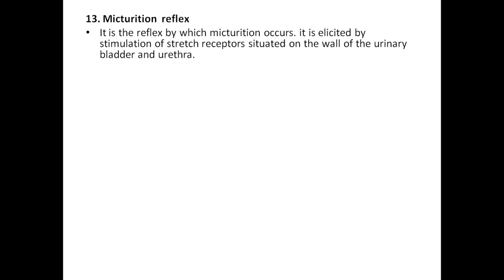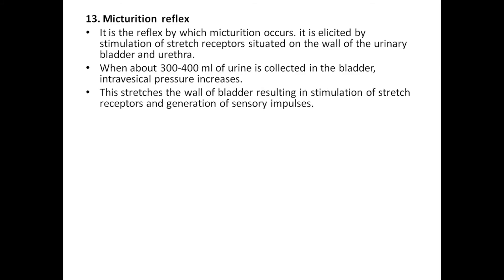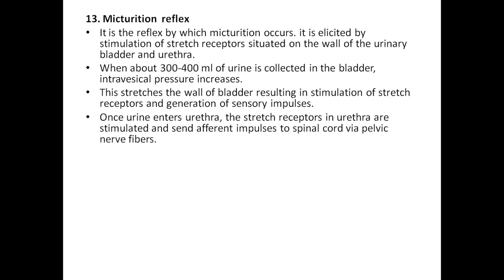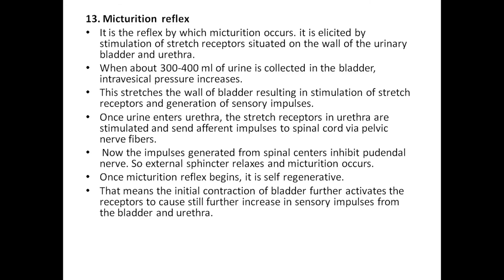Micturition reflex — it is the reflex by which micturition occurs. It is initiated by stimulation of stretch receptors situated in the wall of the urinary bladder and urethra. When about 300–400 ml of urine is collected in the bladder, the intravesical pressure increases, stretching the wall of the bladder and stimulating stretch receptors to generate sensory impulses. Once urine enters the urethra, stretch receptors in the urethra are stimulated and send afferent impulses to the spinal cord via pelvic nerve fibers. The impulse generated from spinal centers inhibits the pudendal nerve, so the external sphincter relaxes and micturition occurs. Once the micturition reflex begins, it is self-regenerative — meaning initial contraction of the bladder further activates receptors to cause still further increase in sensory impulses.